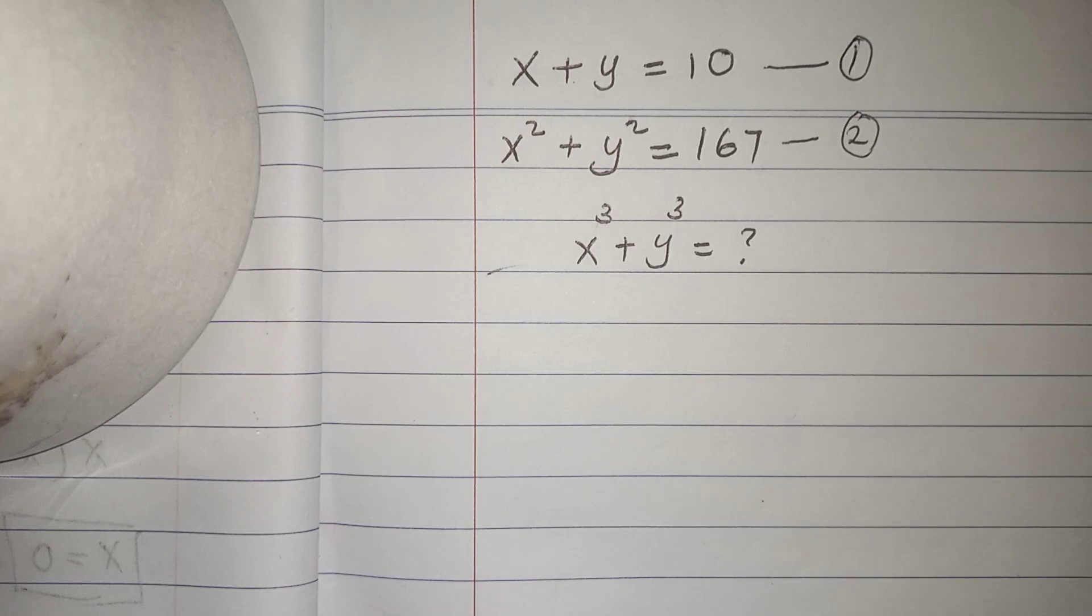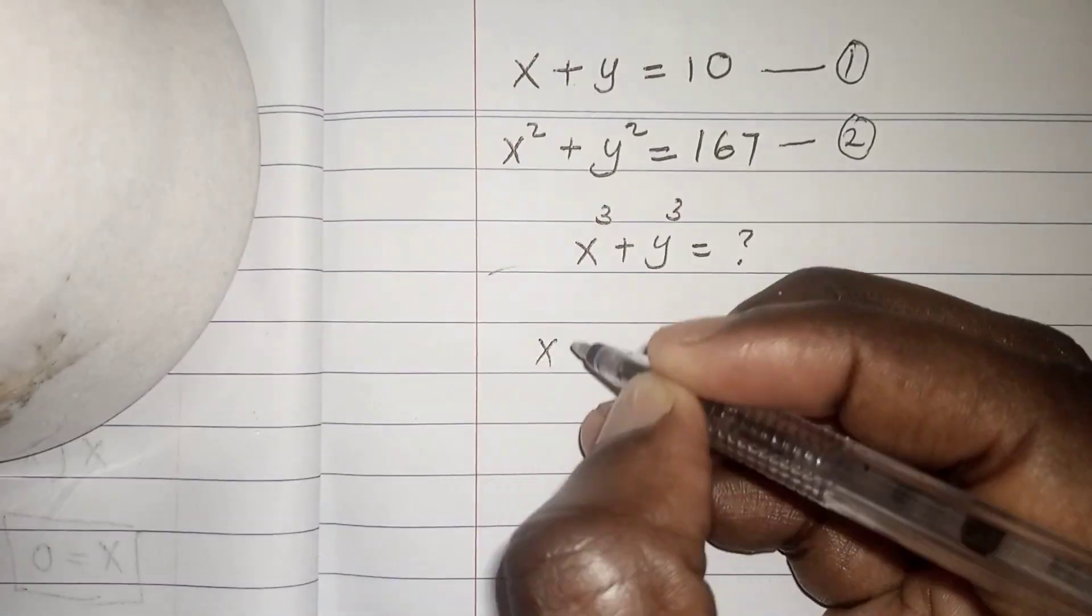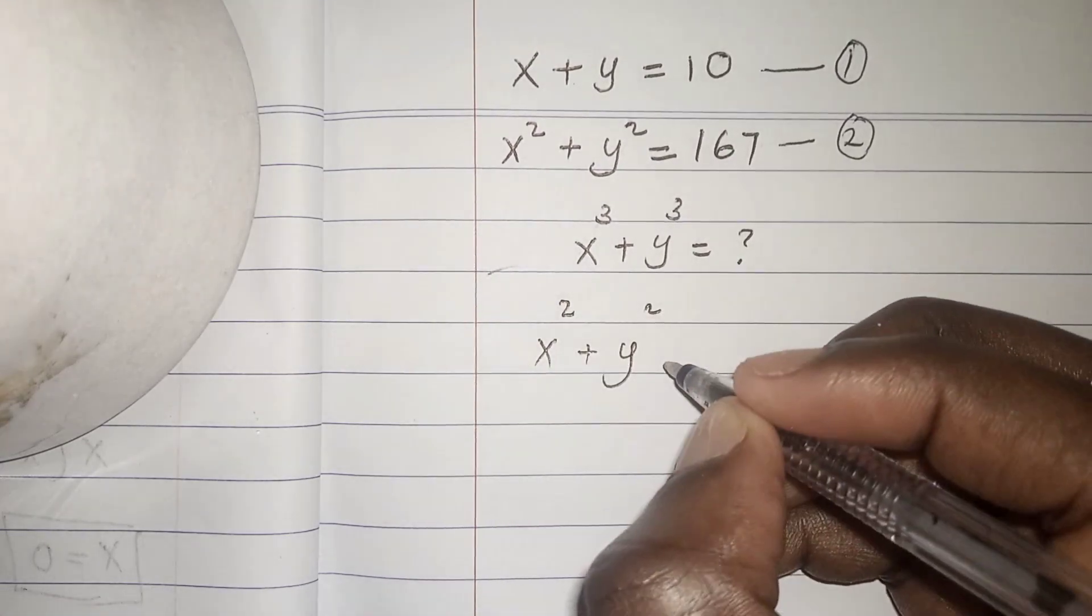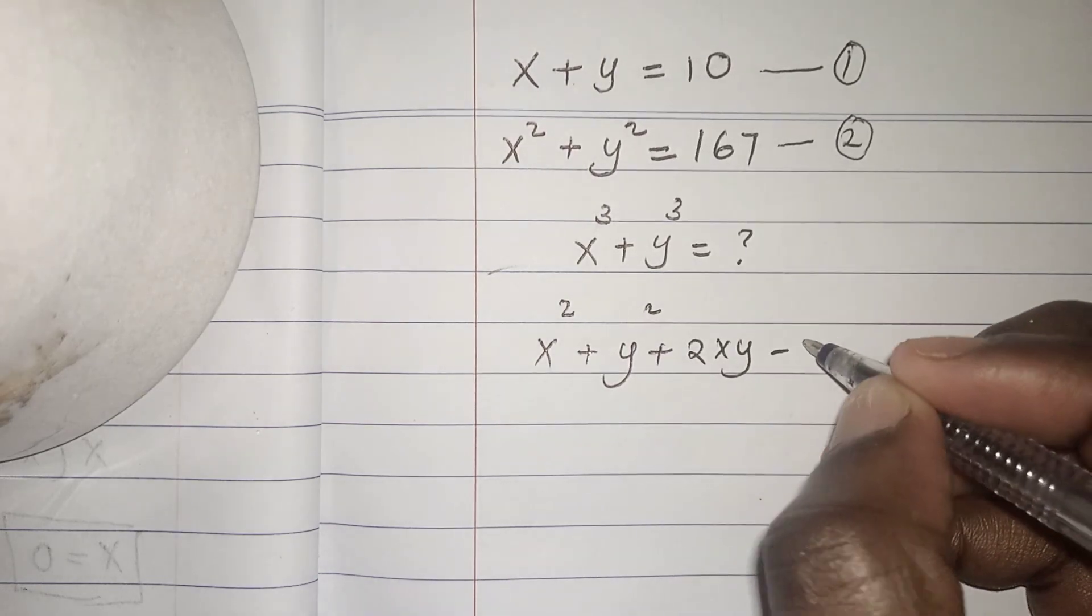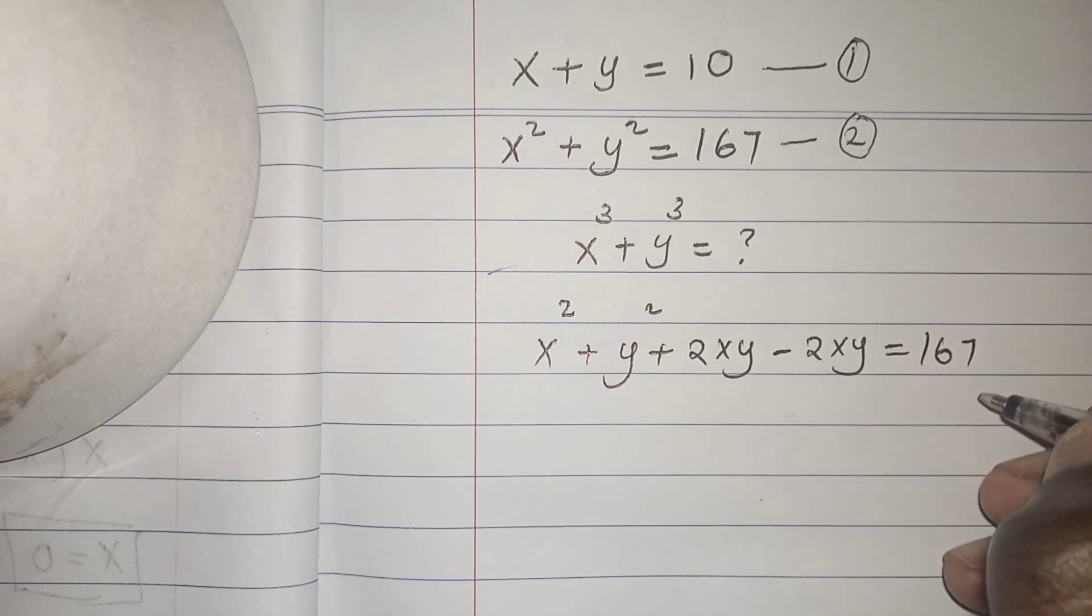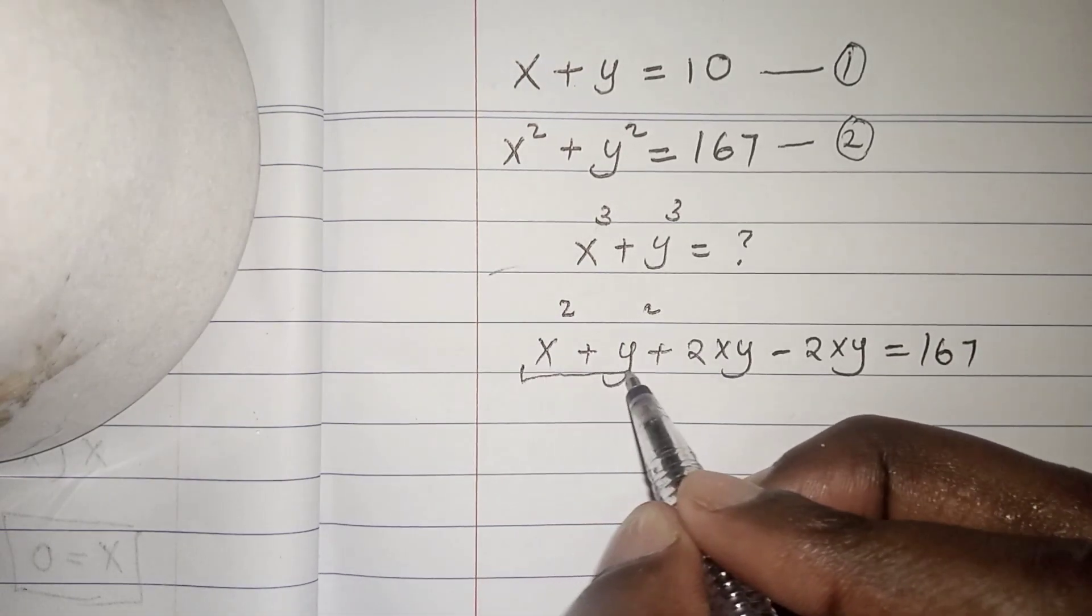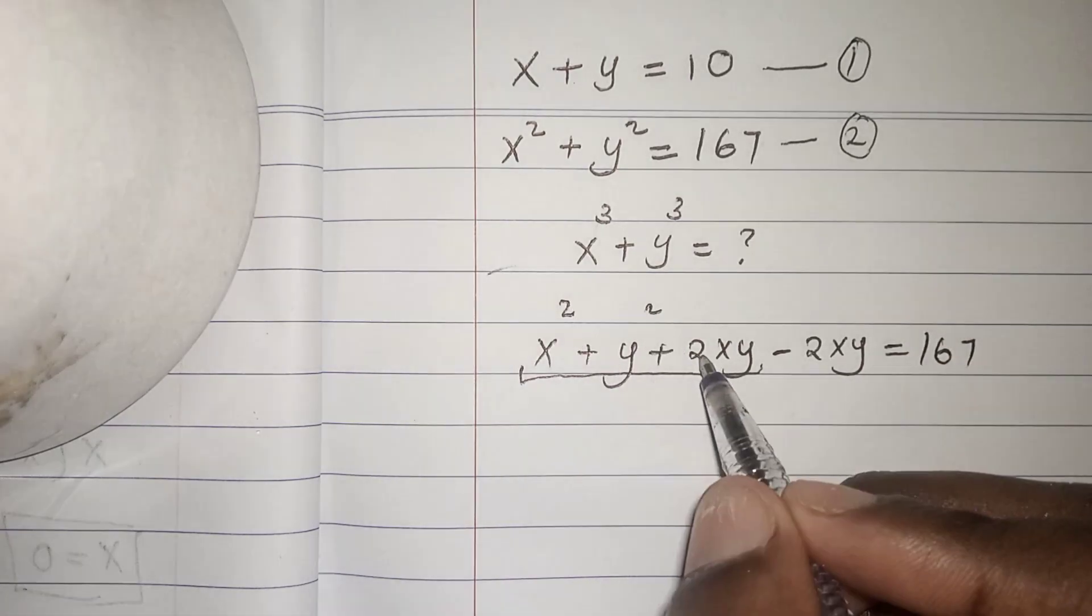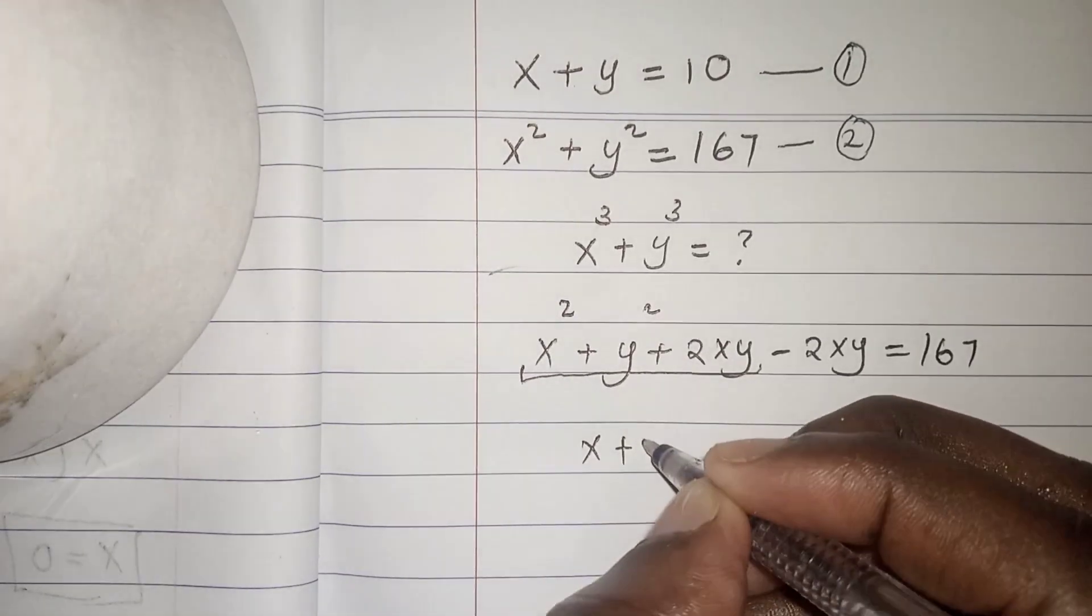Our next step, we are going to use equation 2. So we can write it as x squared plus y squared, then we add plus 2xy minus 2xy equals 167. From this point, x squared plus y squared plus 2xy, we can express it as x plus y